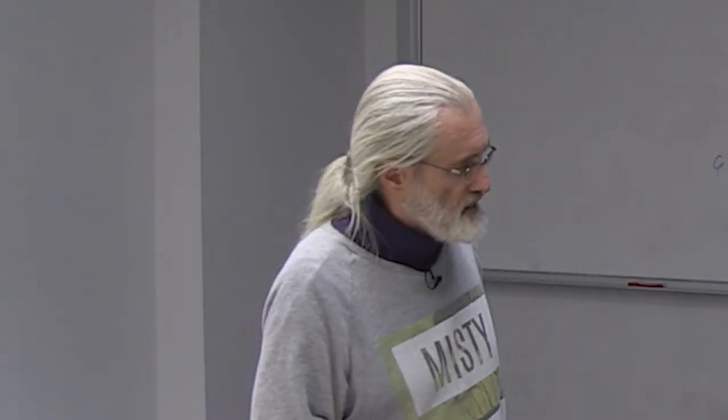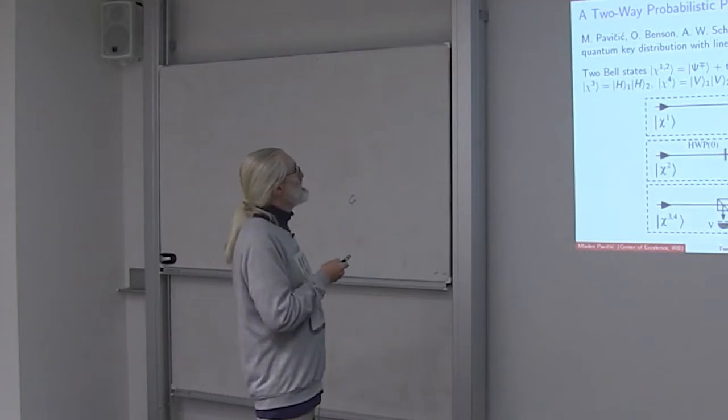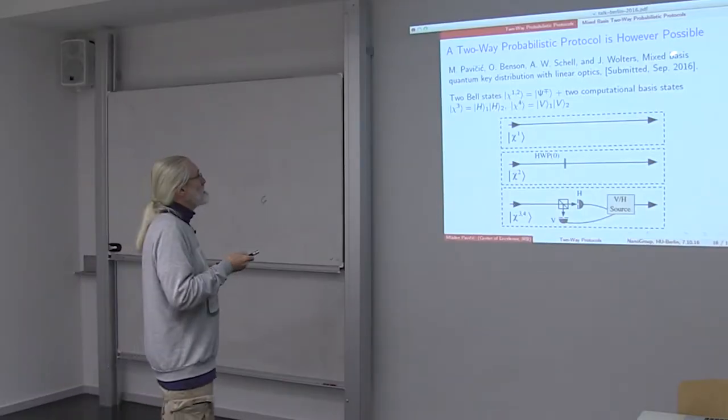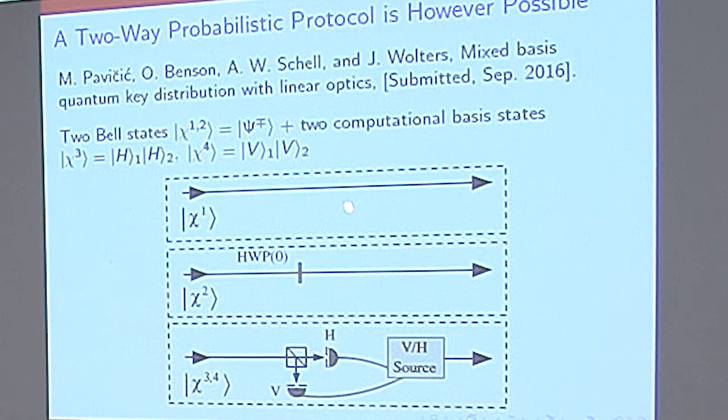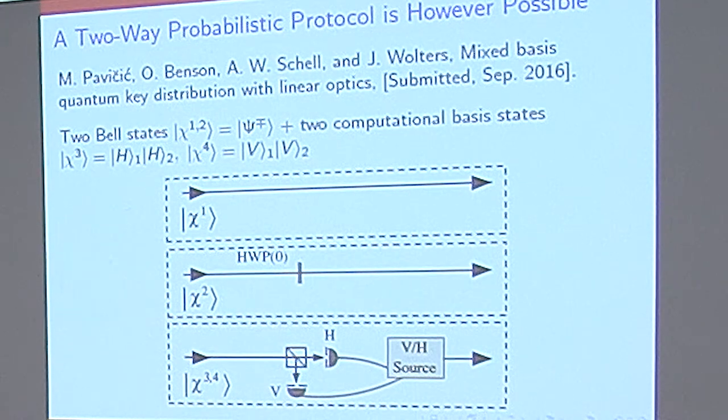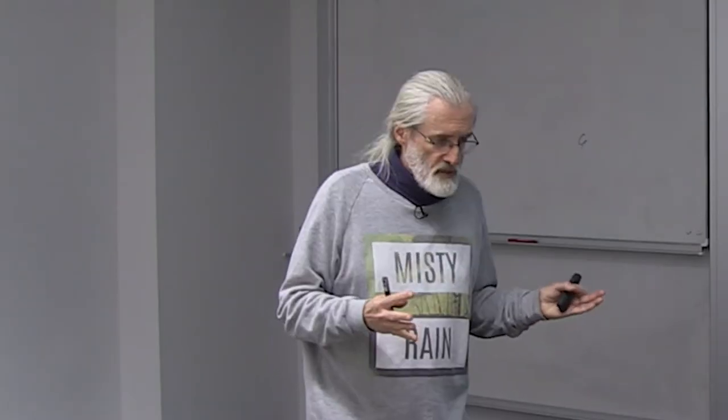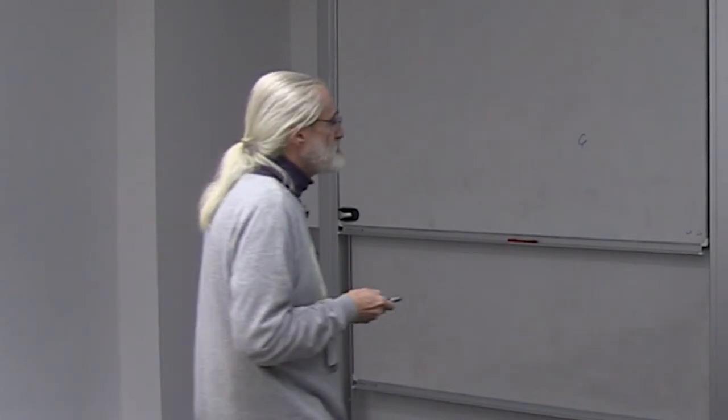Does that mean that taken together two-way protocols are doomed, that they can't be efficiently implemented? No, it doesn't. There is a way to implement probabilistic two-way protocol as we did in our recent work. So we make use of two Bell states like in the ping-pong protocol, and two states from the computational basis, which are interesting in themselves.